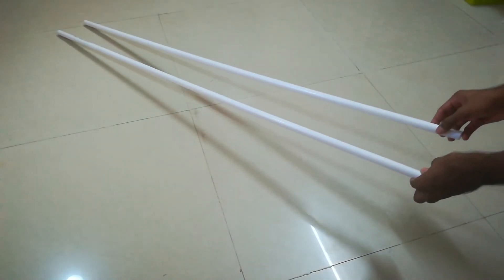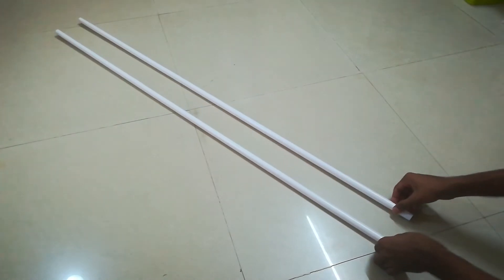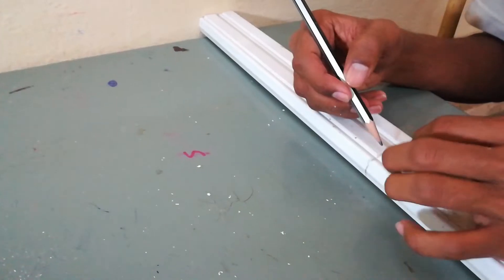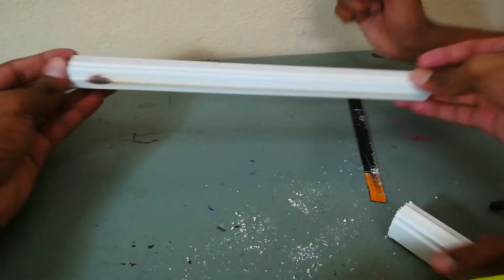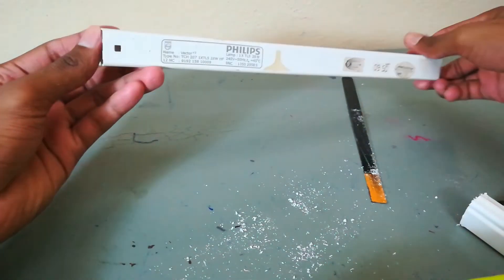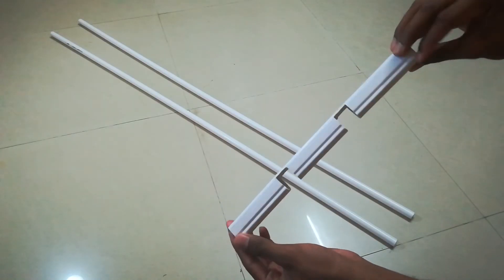Then take those 5 feet long pipes and we need to find a way to keep them steady. So I took some waste plastic bars and prepared these kind of pieces.